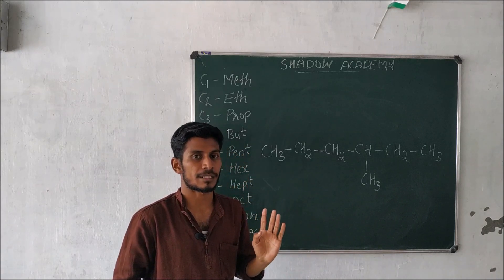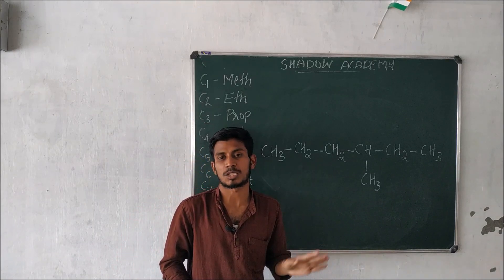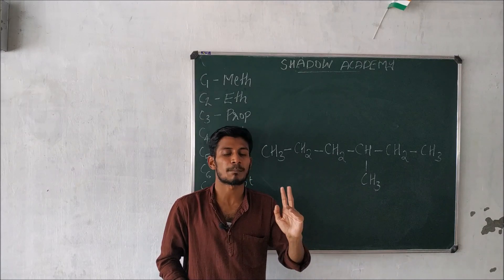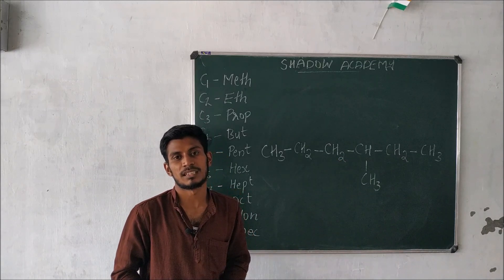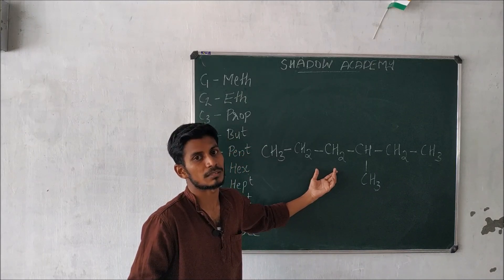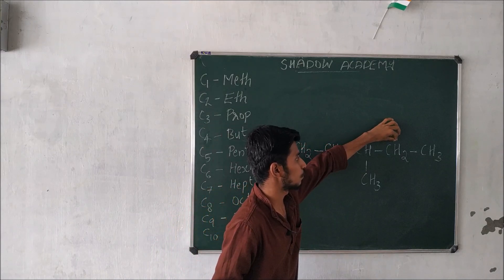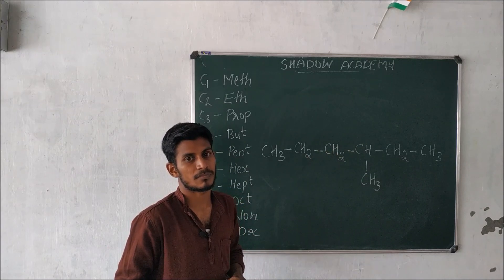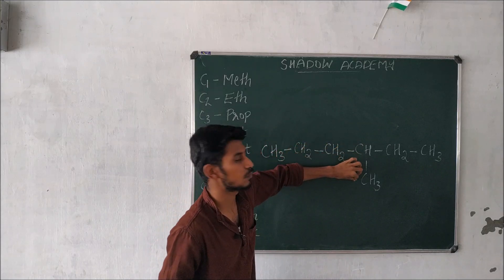One thing is, the main chain is the longest chain and the parent chain. What is the longest chain? The main chain is the longest chain. For example, I have 6 carbon atoms: one, two, three, four, five, six. I have the same chain: one, two, three, four, five.